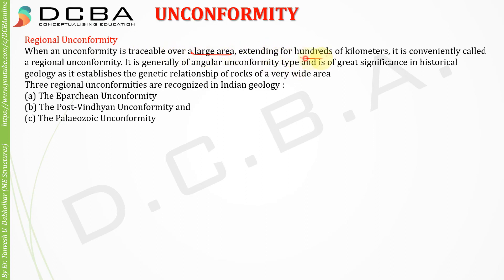Regional unconformity is the opposite of local unconformity. When an unconformity is traceable over a large area extending for hundreds of kilometers, it is called a regional unconformity. It is generally of angular unconformity type and is of great significance in historical geology. In Indian geology, we have three regional unconformities: the Eparchean unconformity, the Post-Vindhyan unconformity, and the Paleozoic unconformity.